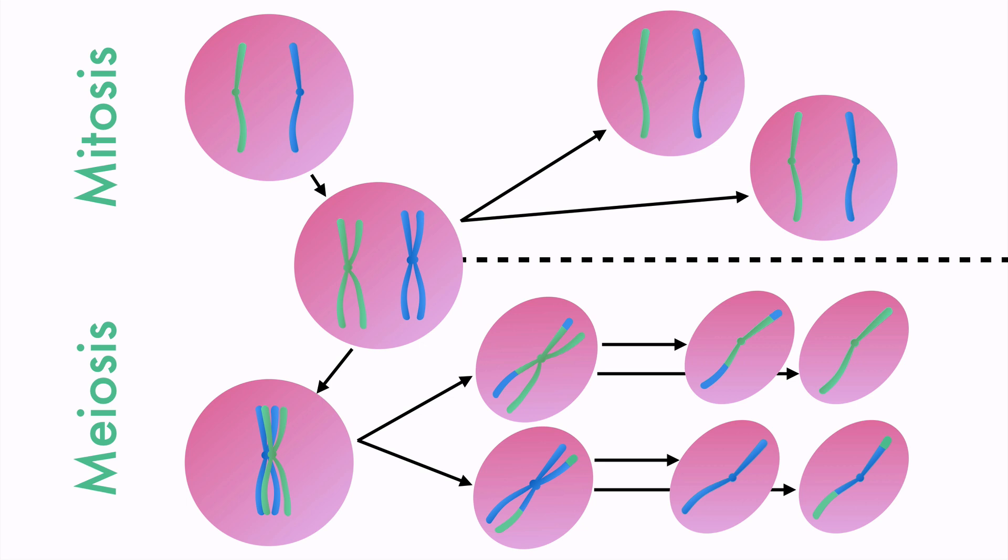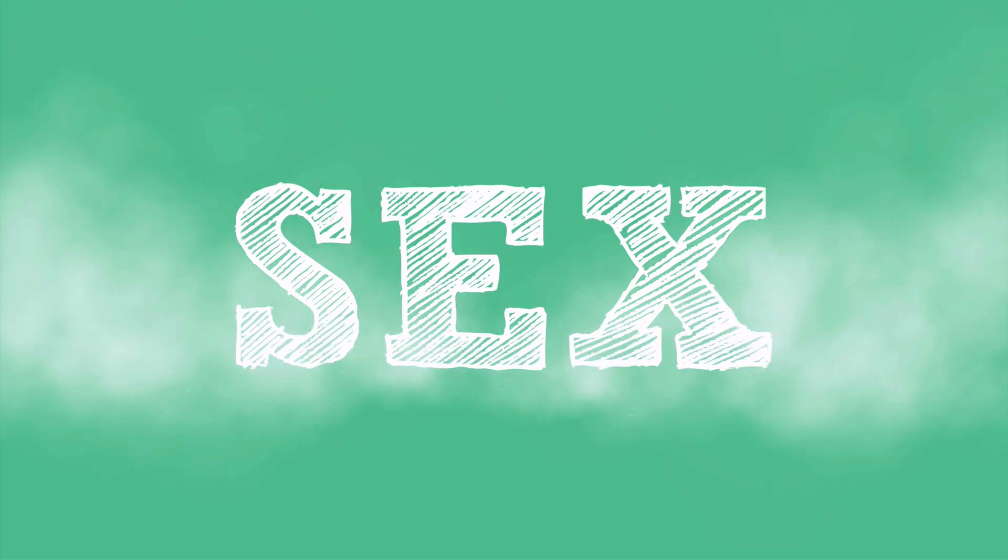But why would we want any cells with half the number of chromosomes? Sex! Oh sure, now you're paying attention. But seriously, in order for the sperm of the father and the egg from the mother to make a normal baby, they each have to contribute half of the chromosomes.